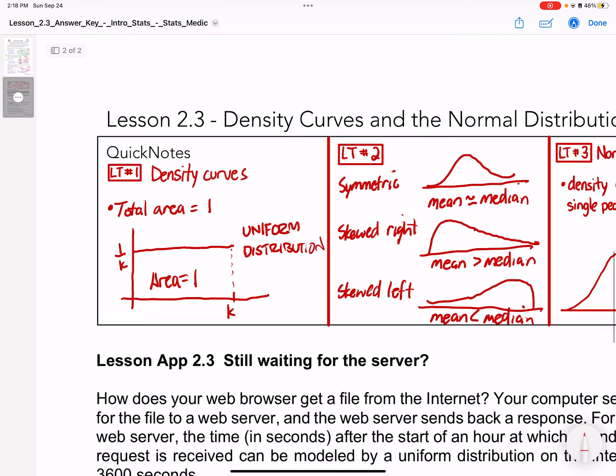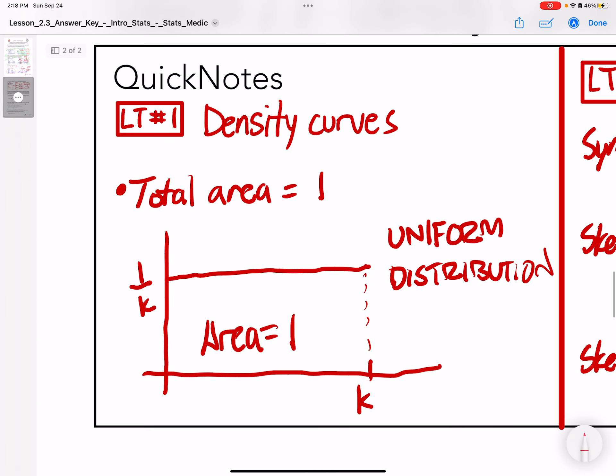The three things I want you to learn from this lesson. First, density curves. The area under a density curve is 1. This area here, if shaded, is 100%. If it's straight across, this is called a uniform distribution. Equal probability for every outcome is what a uniform distribution does.